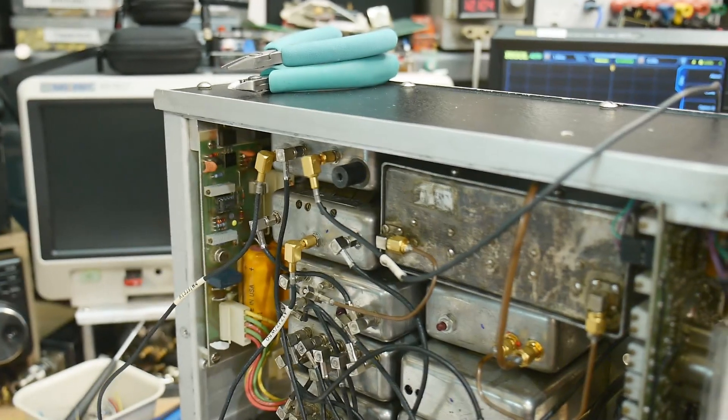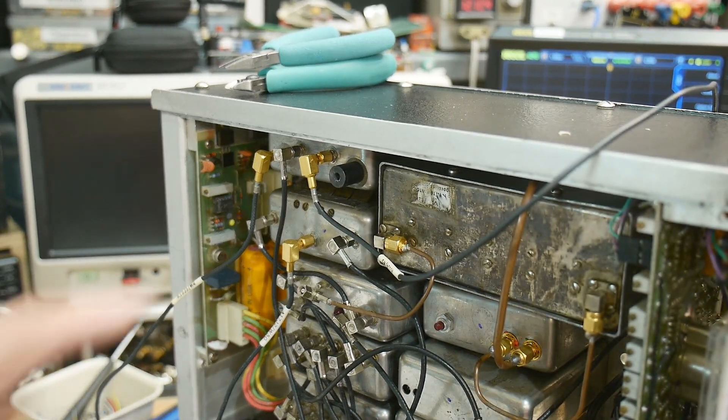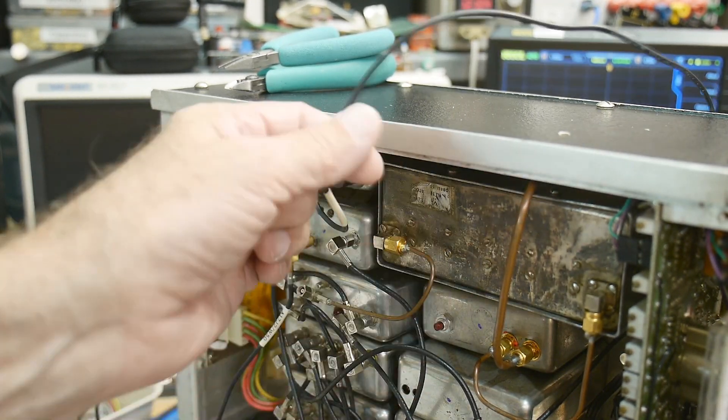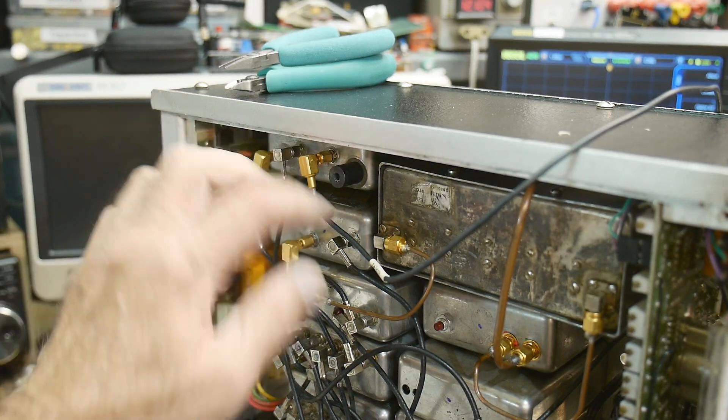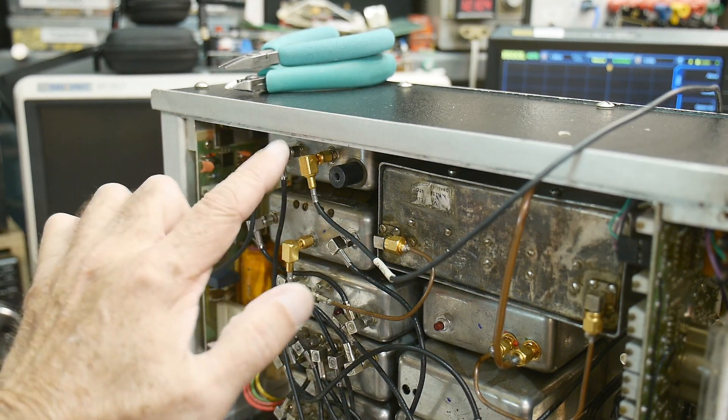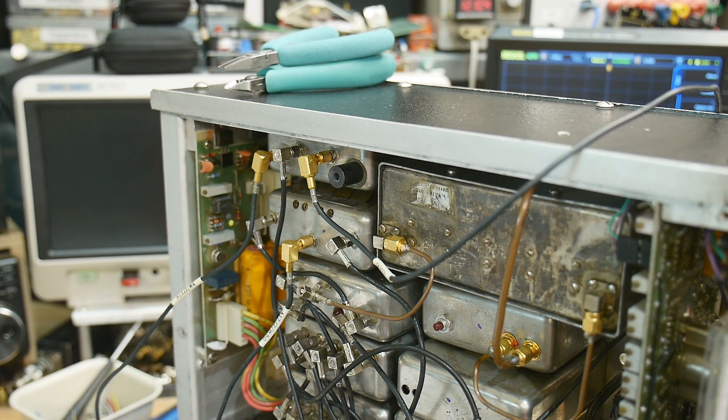So this goes off to the oscilloscope so that we can monitor that signal. So this should be a clean signal. And then this goes off to the oscilloscope for the output, so we can monitor the input, monitor the output, everything should be just fine.